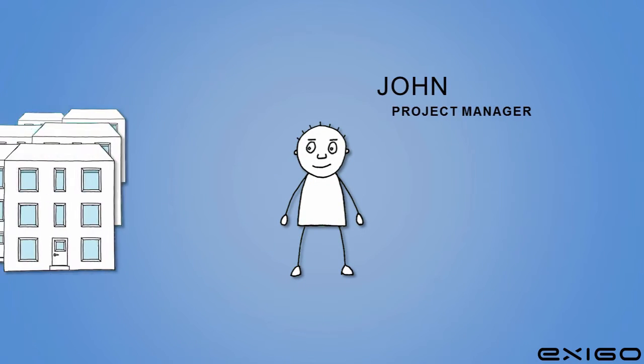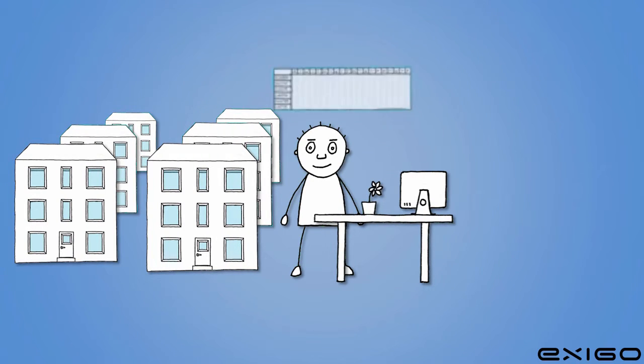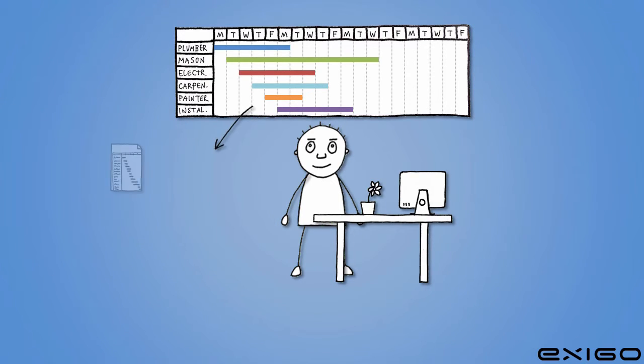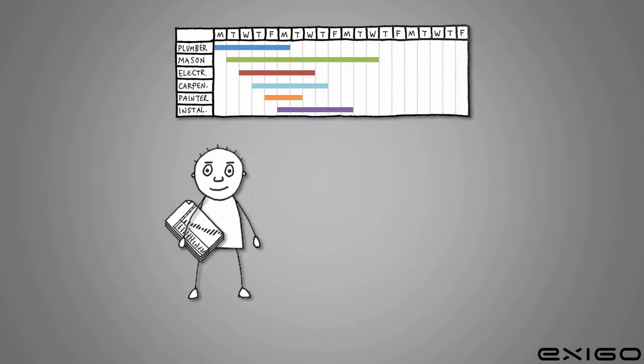This is John. He is the manager of a project renovating six blocks. He knows how important it is to have a good schedule in order to meet his deadline, so he validates expected durations with each trade contractor. John prints out the entire plan, which is pretty long, over many pages, but he puts on a brave face and starts the project.